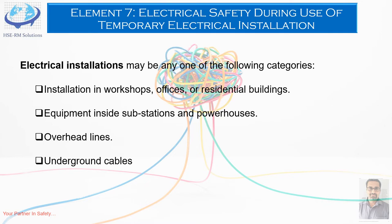Everybody is aware of electric shock — it occurs when a body becomes part of an electric circuit. The current must enter the body at one point and leave at another. Shock may occur in one of three ways: first, contact with both wires of the electric circuit; second, contact with one wire of an energized circuit and the ground; and third, contact with a metallic part that has become live through contact with an energized wire.